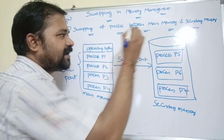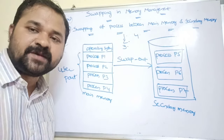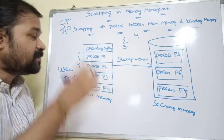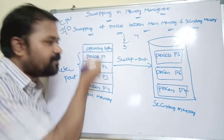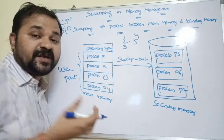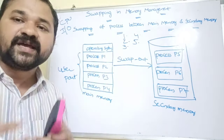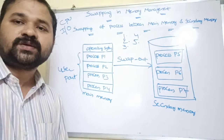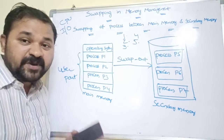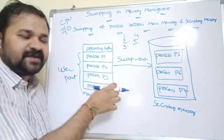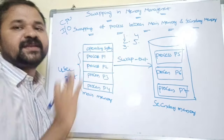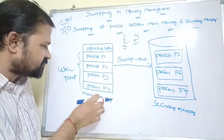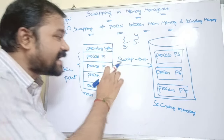Let us take the round robin algorithm. In round robin, we execute a process for a particular time quantum. If that time quantum is completed, there is no need of the CPU for that process, so the CPU transfers that process from main memory to secondary memory. If we take a priority scheduling algorithm, assume that process P1 is a low priority process. While executing P1, a high priority process enters the ready queue. The CPU needs to stop executing P1, and P1 is transferred from main memory to secondary memory in order to execute the high priority process. These are the various scenarios where a process is transferred from main memory to secondary memory, and this transferring is known as swap out.